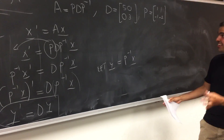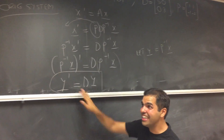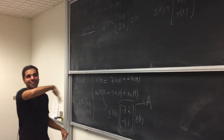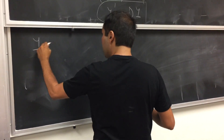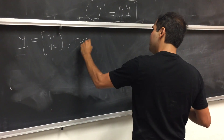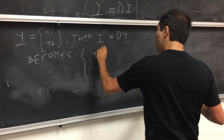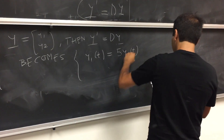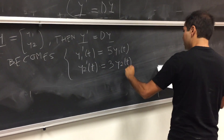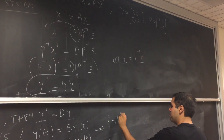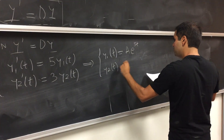This is super useful, because we took our original hard-to-solve system and turned it into a diagonal system — just like the easy one we started with. So if Y equals [Y1; Y2], then Y prime equals D·Y becomes Y1 prime of t equals 5·Y1(t) and Y2 prime of t equals 3·Y2(t). These are easy to solve: Y1 equals A·e^(5t) and Y2 equals B·e^(3t).